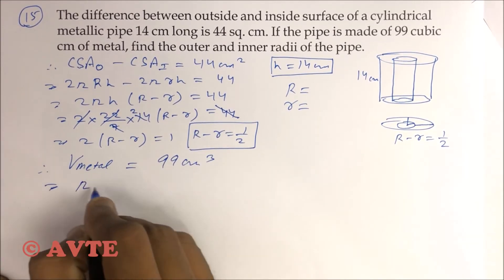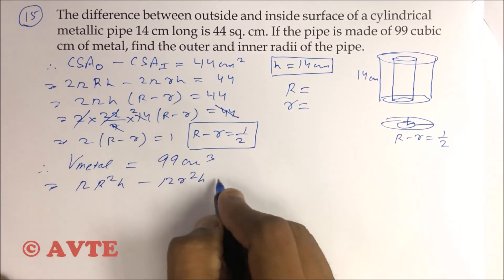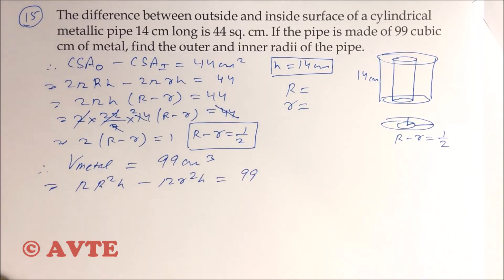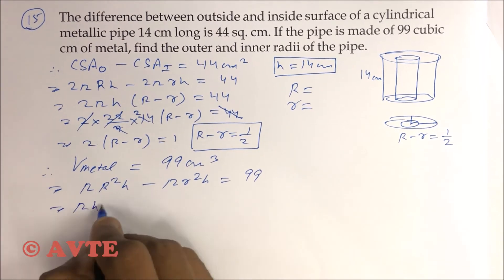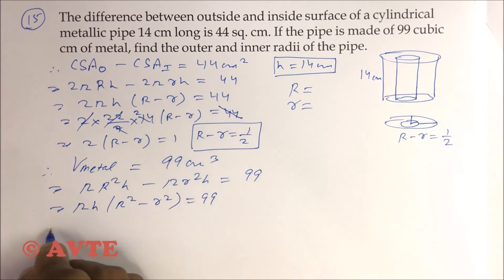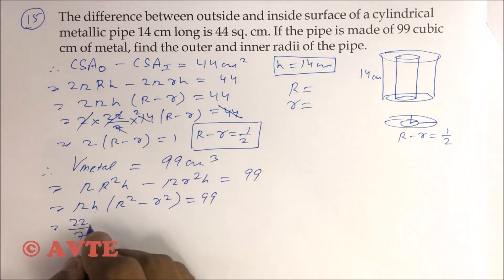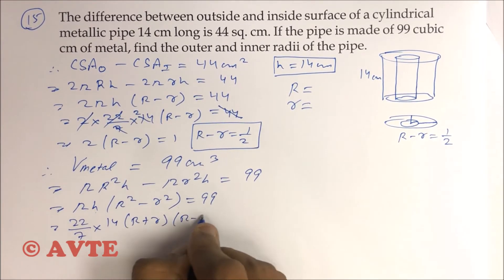That means πR²h minus πr²h equals 99. The volume of outer cylinder minus volume of inner cylinder is 99. You take πh common, so R² - r² = 99, and here h is 14 and (R + r)(R - r) = 99.